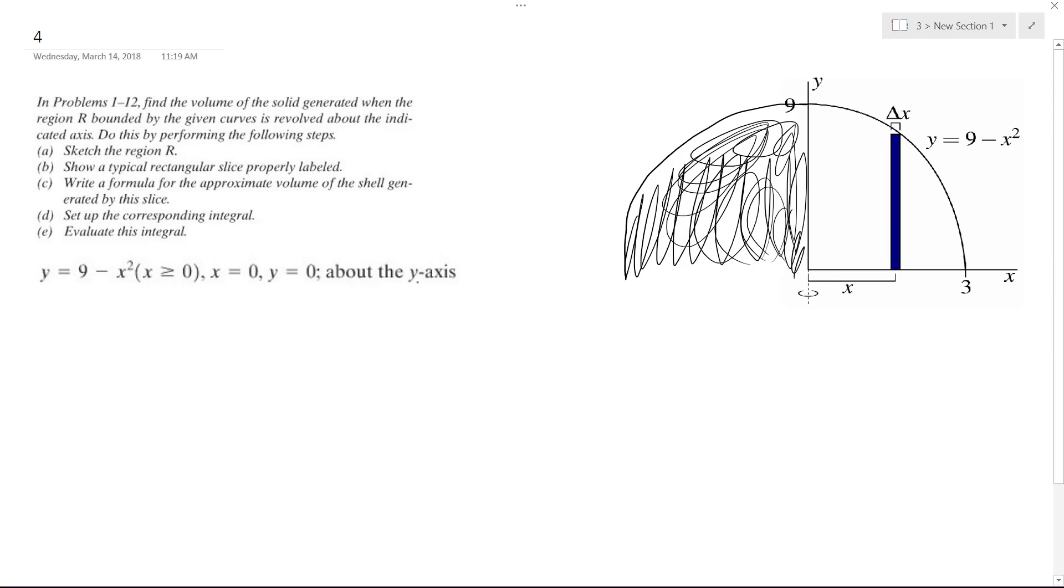So we're going to use the method of shells. So it's going to be, instead of pi r squared, it's going to be 2 pi x. So in this case,